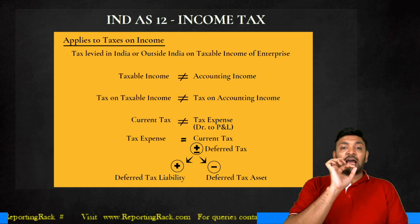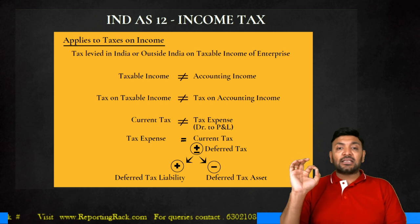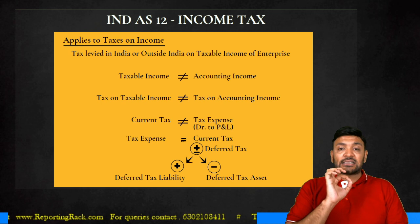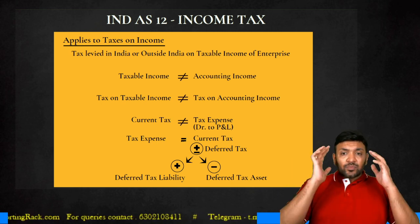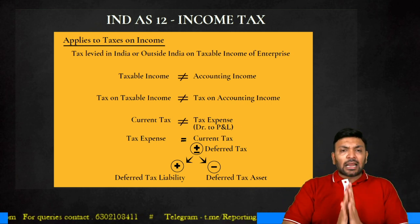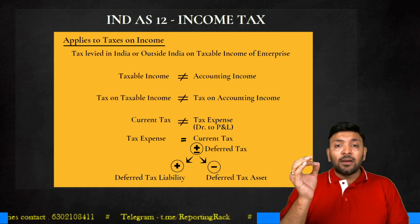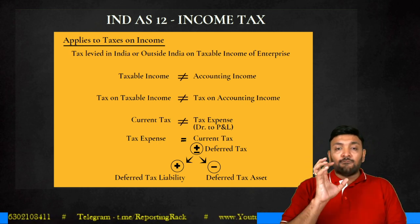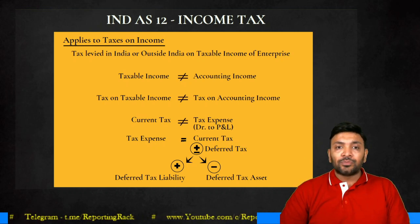The formula: Tax Expense = Current Tax ± Deferred Tax. Whenever it is a plus symbol it signifies deferred tax liability; whenever it is a minus symbol it signifies deferred tax asset. This is the underlying principle of why the standard emerges — why this standard is even required is because of this underlying principle.